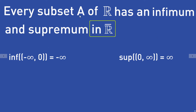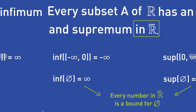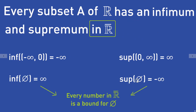So, every subset A of ℝ has an infimum and supremum in the extended real numbers. Even the empty set has an infimum and a supremum. Why? Because every number in the extended real numbers is a bound for the empty set. For the infimum, we have to take the largest of these bounds, which is infinity. And for the supremum of the empty set, we take the lowest of these bounds, which is minus infinity. So in the end, we have this nice theorem: every subset A of ℝ has an infimum and supremum in the extended real numbers, even the empty set.